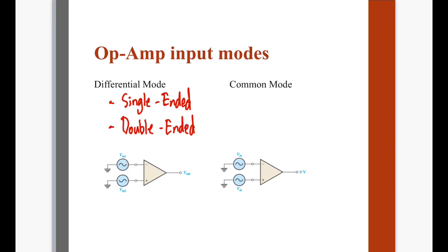Kapag double-ended naman, both inputs meron siyang signal parang dito sa figure, but the requirement is dapat magkaiba yung value nila. Kasi once pareho sila, it becomes a common mode. Kapag common mode, pareho yung signal mo sa dalawang input, but the output should be zero. Bakit zero? Kasi sabi natin, ang differential amplifier amplifies the difference of the two signals. So kapag tinignan mo yung input voltage — yung difference ng dalawa — kapag pareho yung dalawa, it will cancel each other, then the answer becomes zero. Therefore, since V-in is zero sa isang differential amplifier, the output becomes zero din ideally. But practically, nagkakaroon pa rin ng maliit na output.